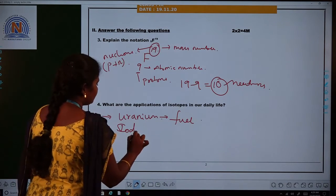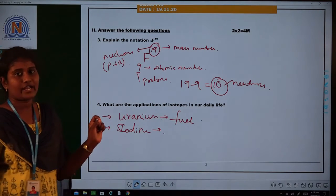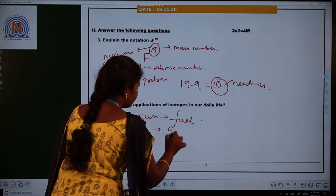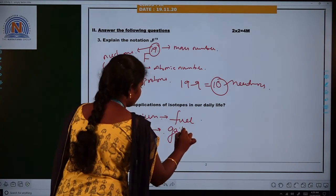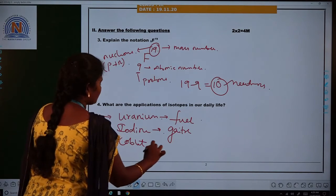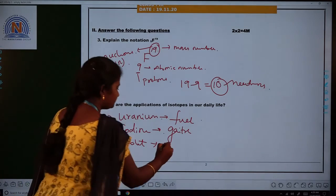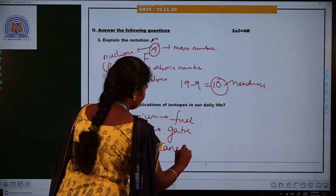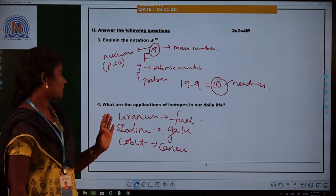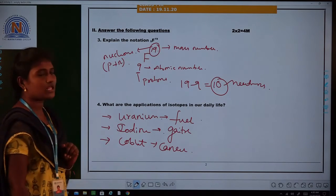Next, iodine: the isotope of iodine is used in the treatment of goiter. Next, cobalt: cobalt is also an isotope used in the treatment of cancer. So like this, there are many applications of isotopes in our daily life.